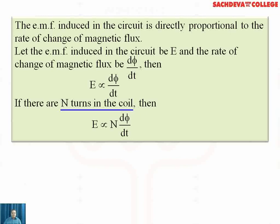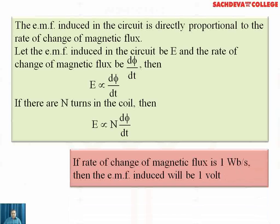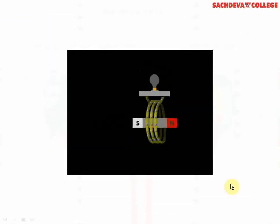If there are N turns in the coil, then the induced EMF is proportional to N·dφ/dt. When we remove the proportionality sign, we bring in Lenz's law. Lenz's law states that if the rate of change of magnetic flux is one Weber per second, then the EMF induced will be one volt. This arrangement illustrates Faraday's law of electromagnetic induction.